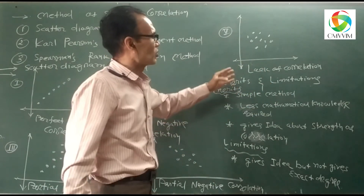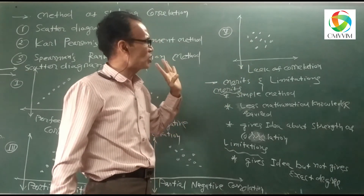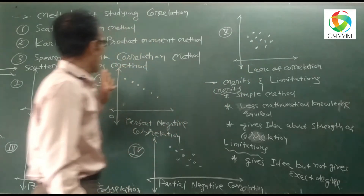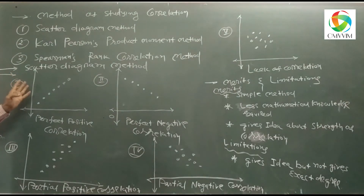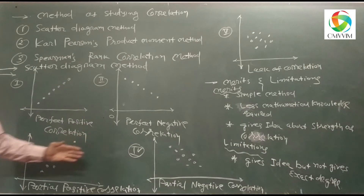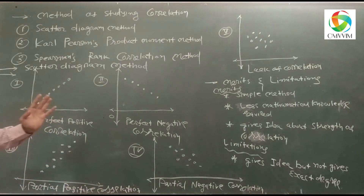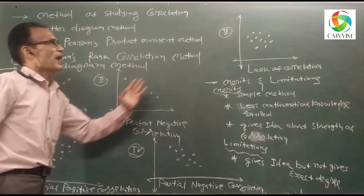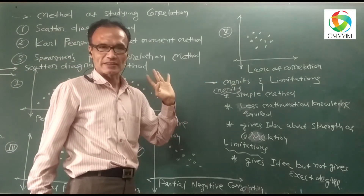So there is also zero correlation. So here are five types: Perfect Positive Correlation, Perfect Negative Correlation, Partial Positive Correlation, Partial Negative Correlation, and then there is Zero Correlation.